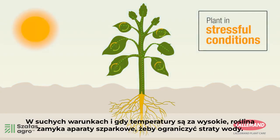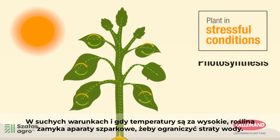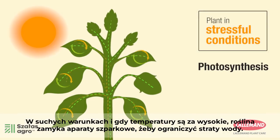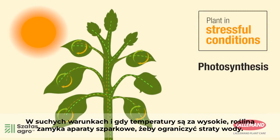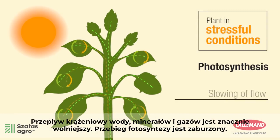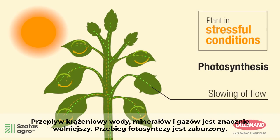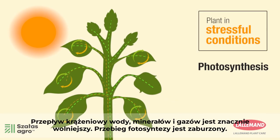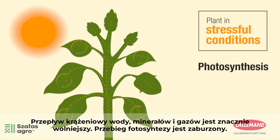In dry conditions and/or when the temperature is too high, the plant closes its stomata to limit water loss. The circulatory flow of water, minerals, and gases is slowed down. Photosynthesis is then disturbed.